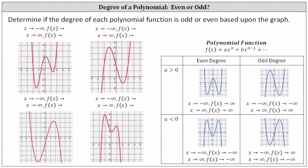Determine if the degree of each polynomial function is odd or even based upon the graph. By determining the end behavior of a polynomial function, we can determine whether the degree is even or odd, as well as whether a, the leading coefficient, is positive or negative.